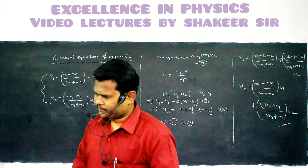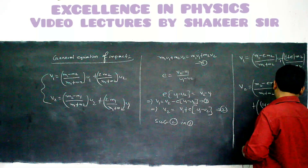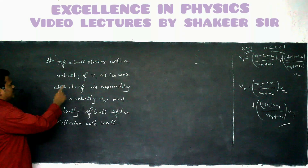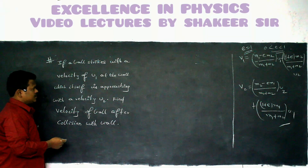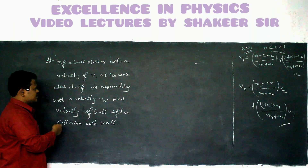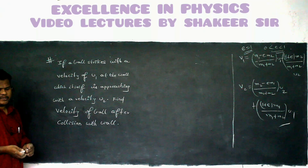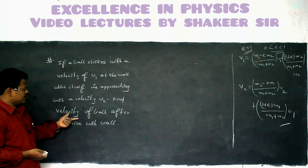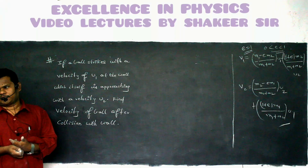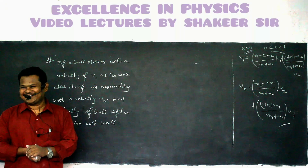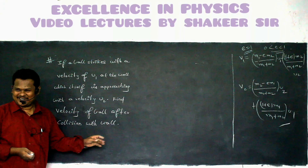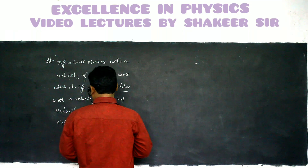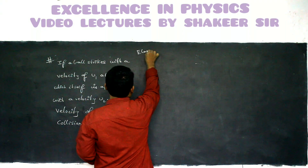Come on, check it out. Now the given question: if a ball strikes with a velocity of U1 at a wall which itself is approaching with a velocity of U2 — meaning ball's velocity is U1 and wall is approaching the ball with velocity U2 — then find the velocity of the ball after collision with the wall. We can solve this problem in two methods.